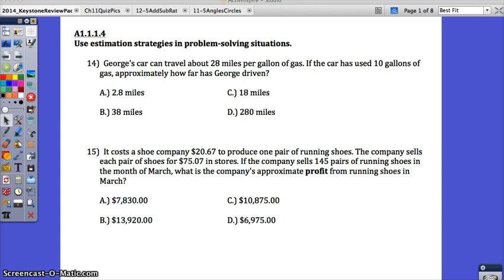Let's start with 14. George's car can travel about 28 miles per gallon of gas. If the car has used 10 gallons of gas, approximately how far has George driven? You have to think about this first statement. The car can travel about 28 miles per gallon of gas. I like to write an equation, but if you struggle with writing equations, maybe make a table and think about this.